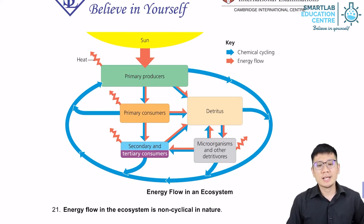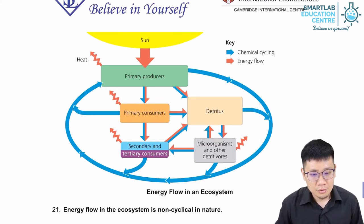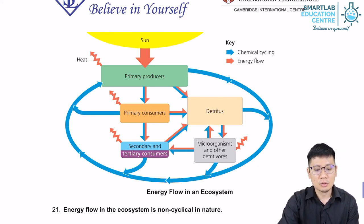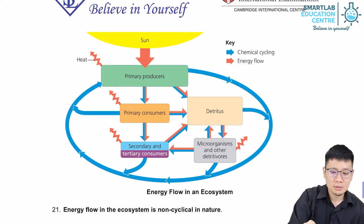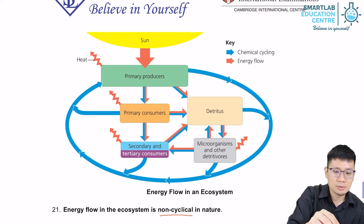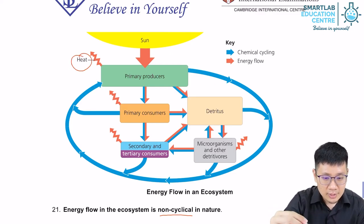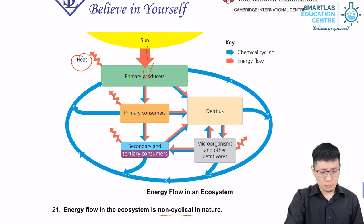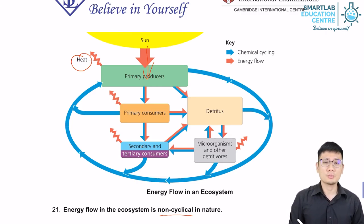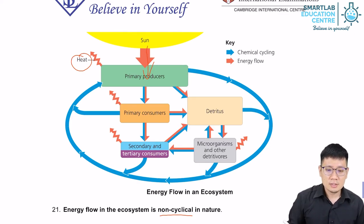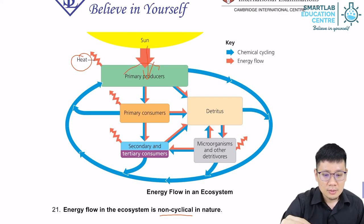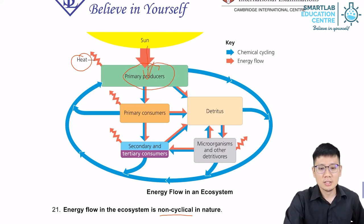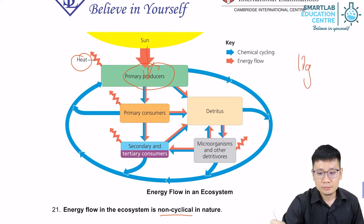Now what about energy? Looking at the orange or red arrow, energy flow is not cyclical. There are many wavy lines in the picture representing heat. When light energy is absorbed by the plant through photosynthesis, that energy is transformed — and since energy cannot be destroyed, only transformed, the light energy is converted into what we call chemical energy.